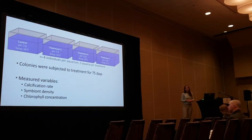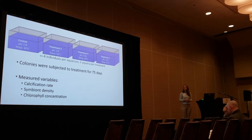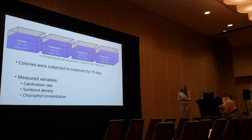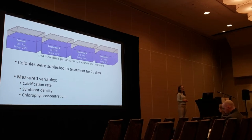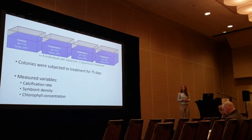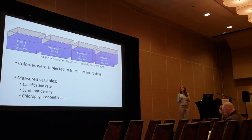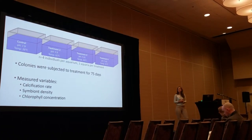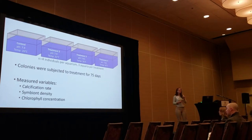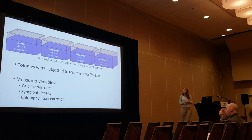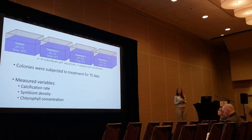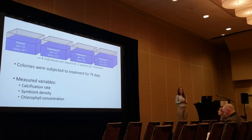For this study, we had three treatments and a control. Our control temperature was about 26 degrees Celsius, which is about the average temperature at Gray's Reef. We also used an ambient pH of 7.9, which is the lower limit of pH seen at Gray's Reef during summer months. Our low pH was about 7.65, based on future projections for the next hundred years or so. Our high temperature was about 31 degrees Celsius, the upper limit currently seen at Gray's Reef during summer. In our tanks, we had four colonies per aquarium and three aquaria per treatment, for a total of three replicates.